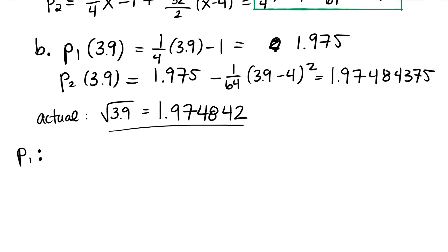So my absolute error, if I subtract those, it doesn't even matter which one I take first. I can take 1.975 minus the actual value of the square root of 3.9. Make sure I'm going to do this. 1.975 minus the actual answer. Yeah, this is great. What is the difference? What is the error? 0.000158. So that's pretty awesome.